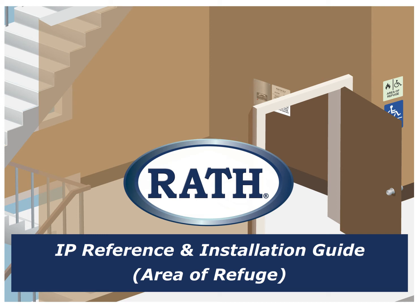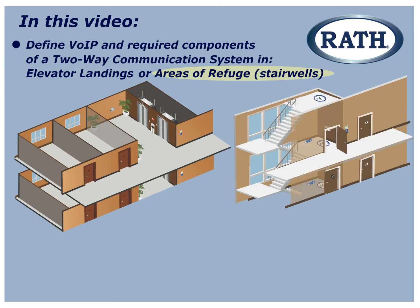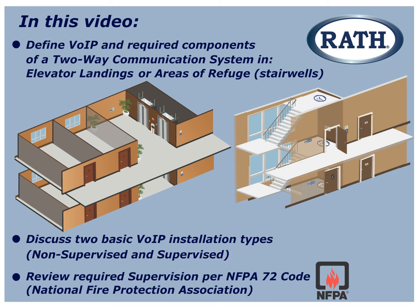Welcome to the RAF IP Reference and Installation Guide. This is a general guideline for installation and connections, not a programming video. In this video, we will define VOIP and required components of a two-way communication system in elevator landings, areas of refuge, and stairwells. We will also discuss two basic VOIP installation types — non-supervised and supervised — and review required supervision per NFPA-72 code.